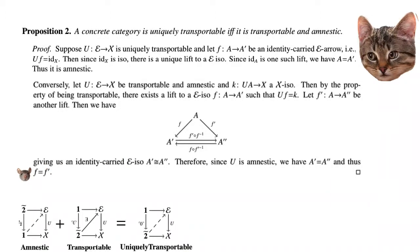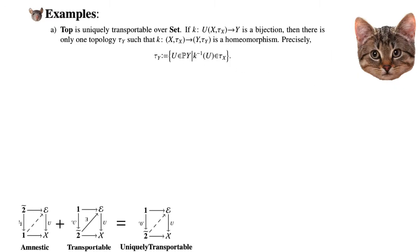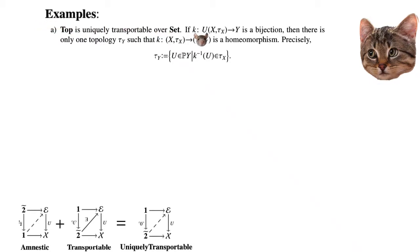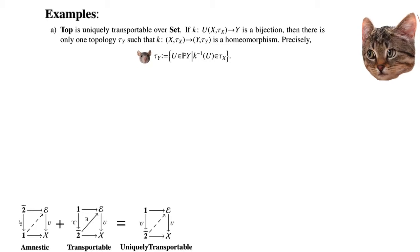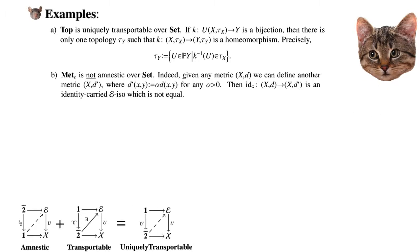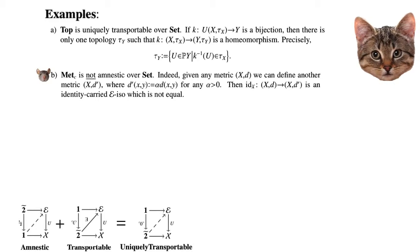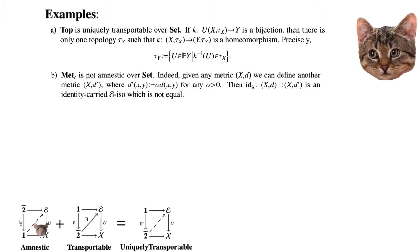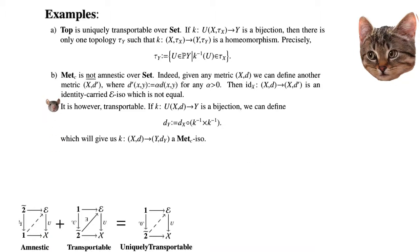Let's give some examples. The category Top of topological spaces is uniquely transportable over Set: given a bijection from X to Y, there exists only one topology such that it lifts to a homeomorphism. The category of metric spaces with continuous maps is not amnestic over Set, because there are many distinct but equivalent metrics, so we don't get a unique lifting. It is however transportable — there exists some lifting.